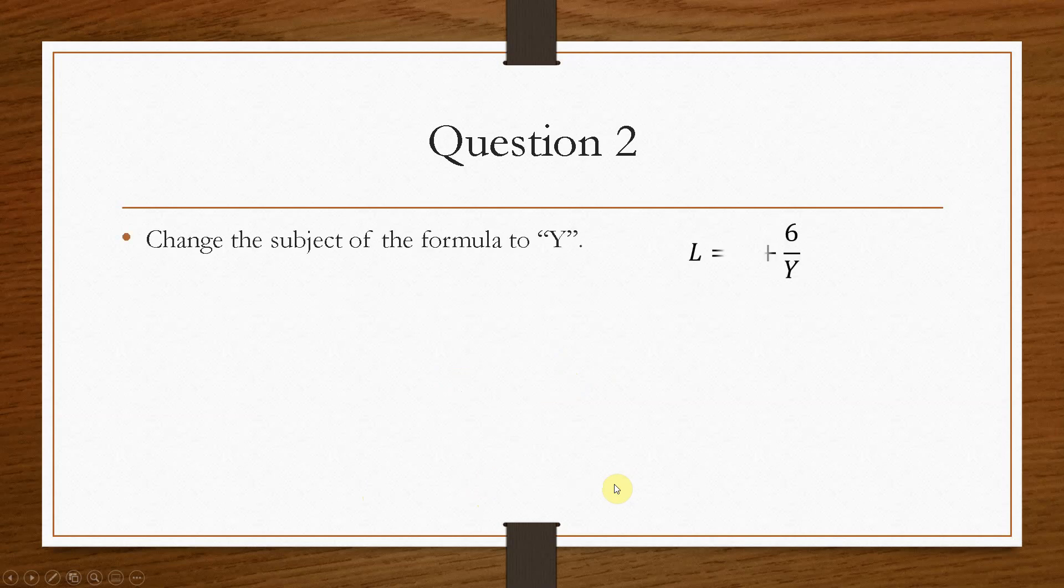If we take a look at question number 2, very similar to the last one, however, this time it's an equation for l. We have l equals 8 plus 6 over y. Now we have to get rid of the 8 and we have to get rid of the 6. So we have to play about with the variables a little bit more than we did in the previous example. But we'll just take it one step at a time.